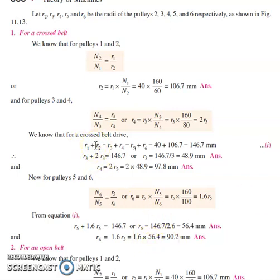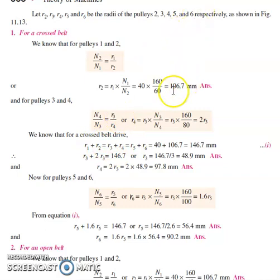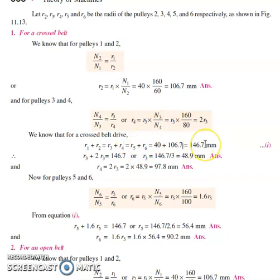Substituting the known data for the crossed belt condition — r1 = 40 mm and r2 = 106.7 mm — we find that r1 + r2 = r3 + r4 = r5 + r6 = 146.7 mm. From this we know r4 in terms of r3, so we can work with the equation r3 + r4 = 146.7 mm.